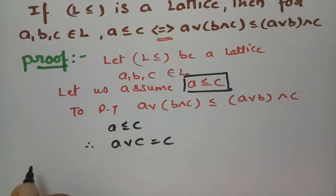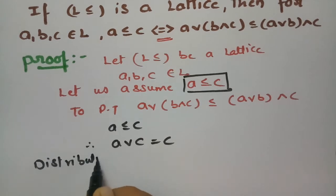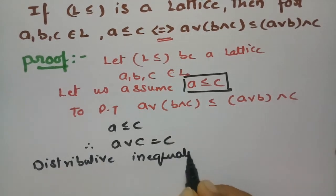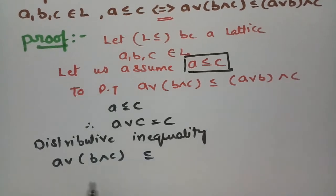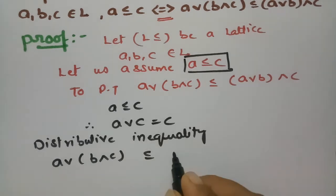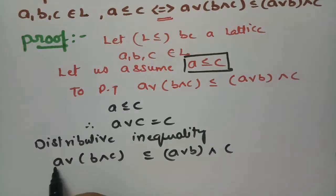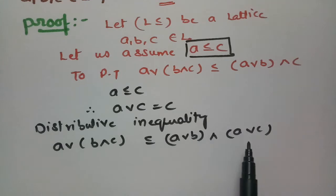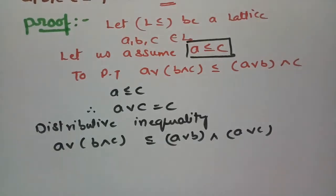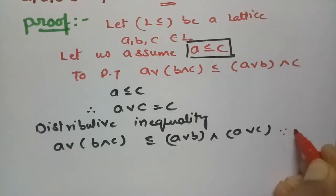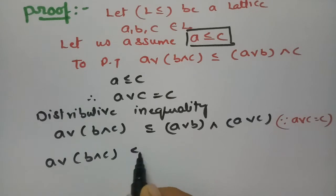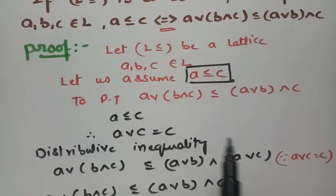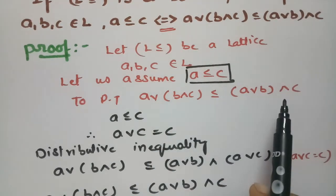Now I am considering the distributive inequality. According to the distributive inequality, A∨(B∧C) ≤ (A∨B)∧(A∨C). This was already proved in my previous video. Taking this distributive inequality and substituting A∨C = C, therefore A∨(B∧C) ≤ (A∨B)∧C. So this is what is asked to prove.